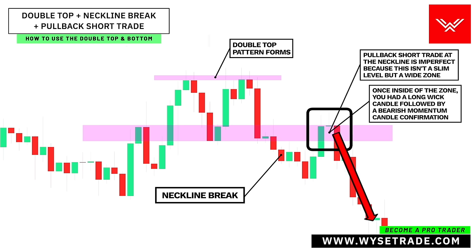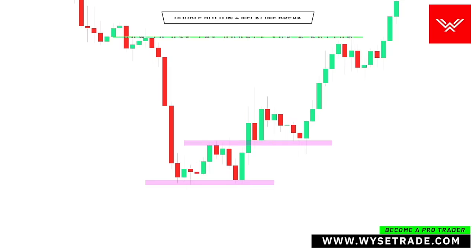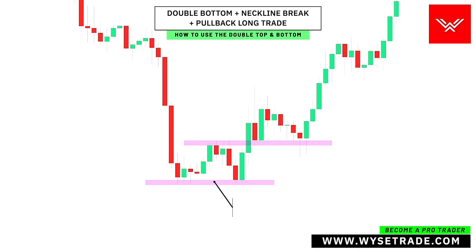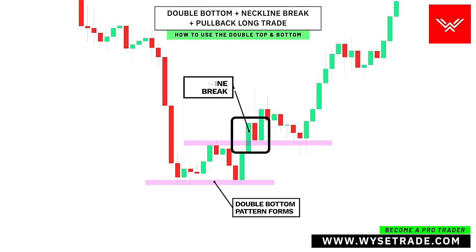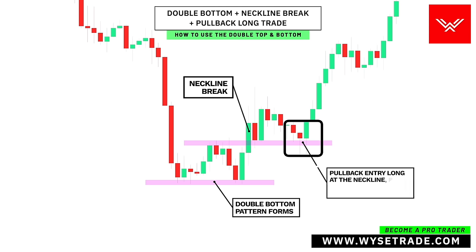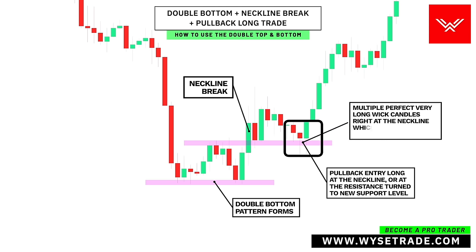Going the other way: you first have your double bottom pattern. Neckline break here. Pullback entry at the neckline here, or at the resistance turn to new support level. You had perfect multiple long wick candles right at the neckline, which presented a high quality long trade.